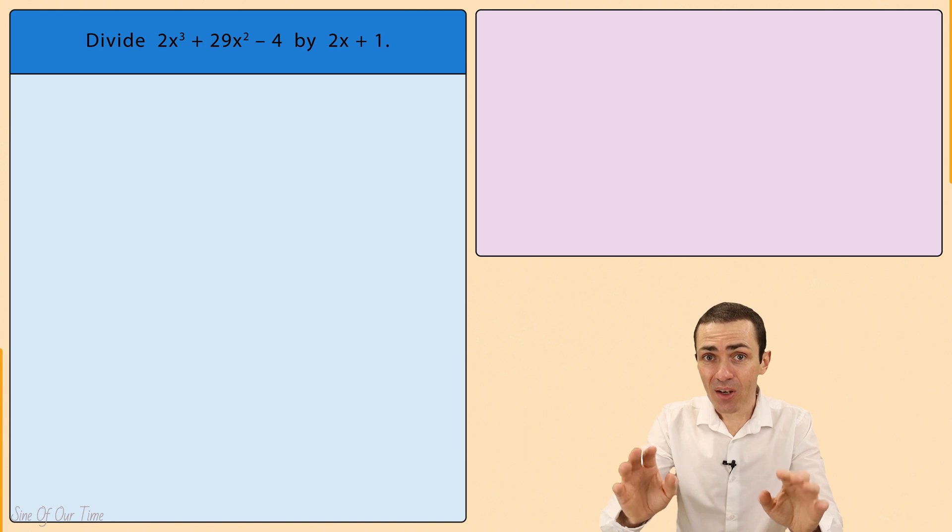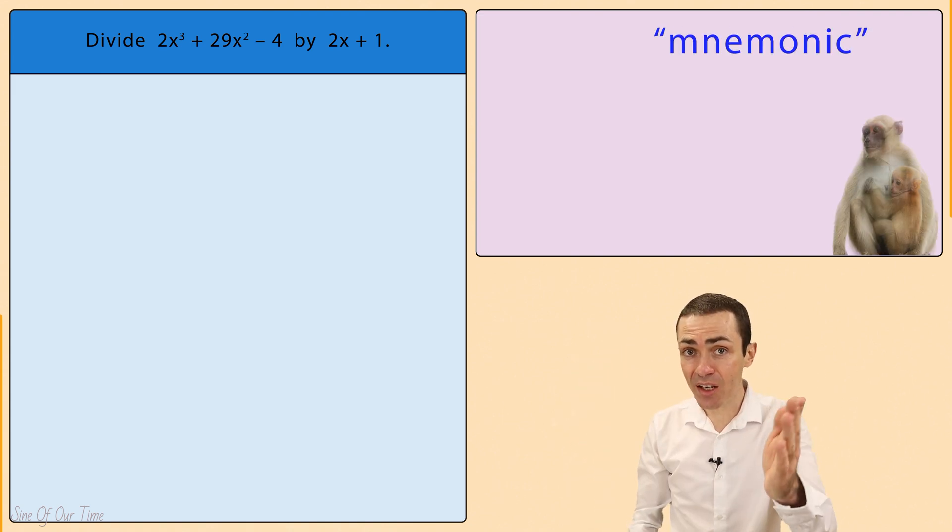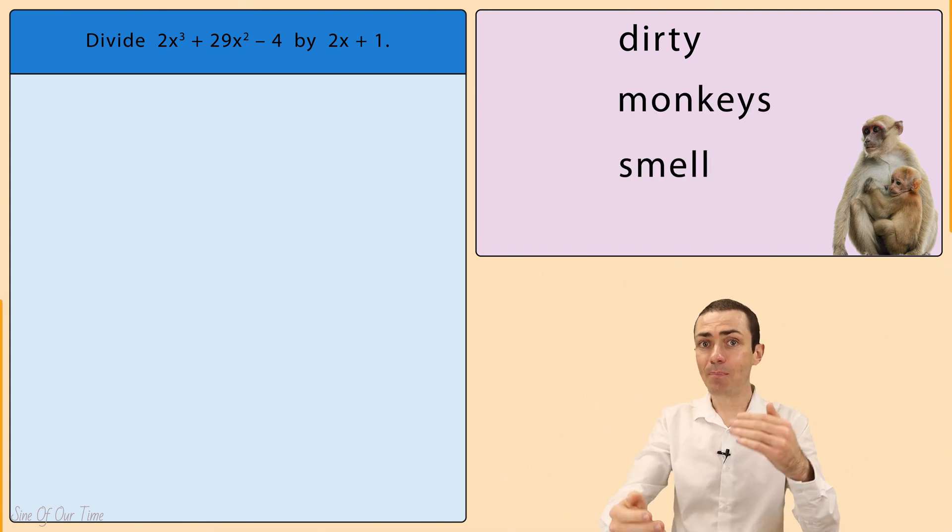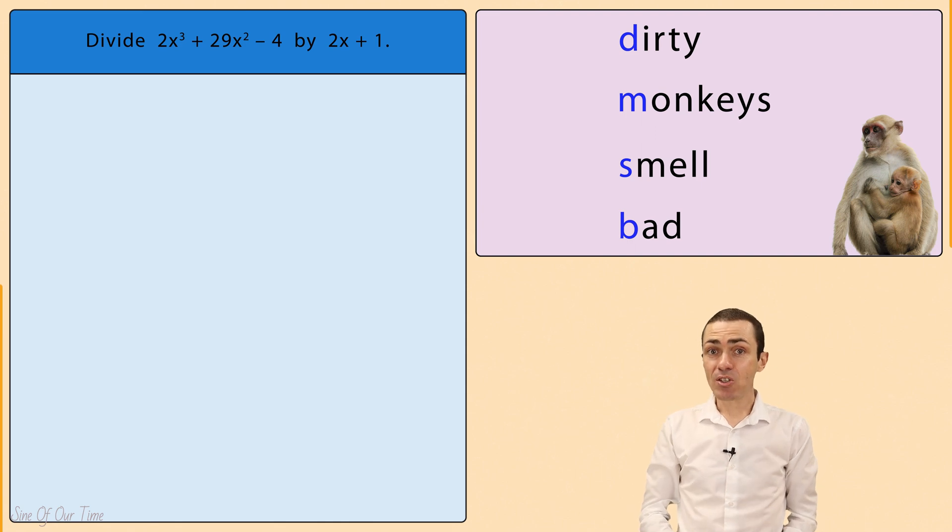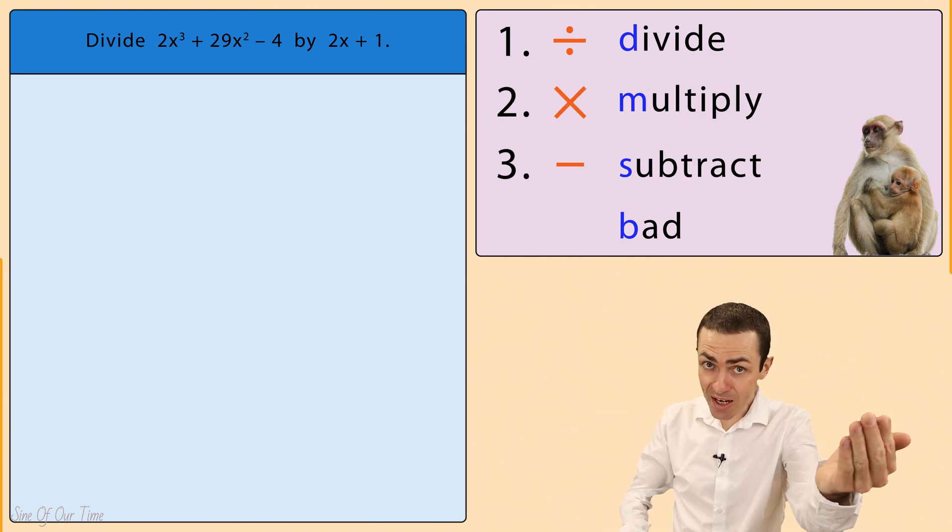Not to worry though, we can still carry out this long division process by repeating those four very simple steps. And remember there is a mnemonic that goes dirty monkeys smell bad, where the first letter of each of those words helps us to remember those steps which are divide, multiply, subtract, and bring down.